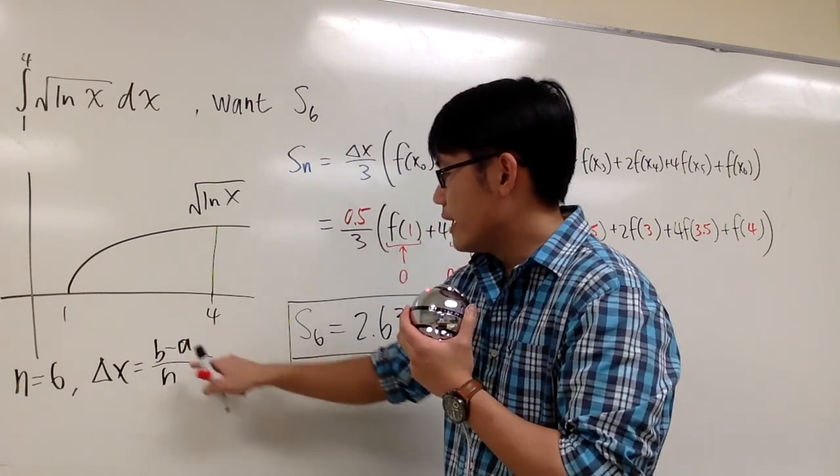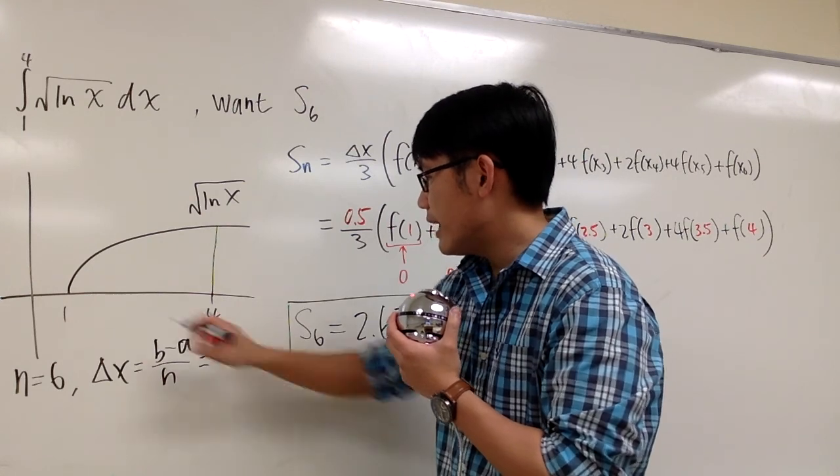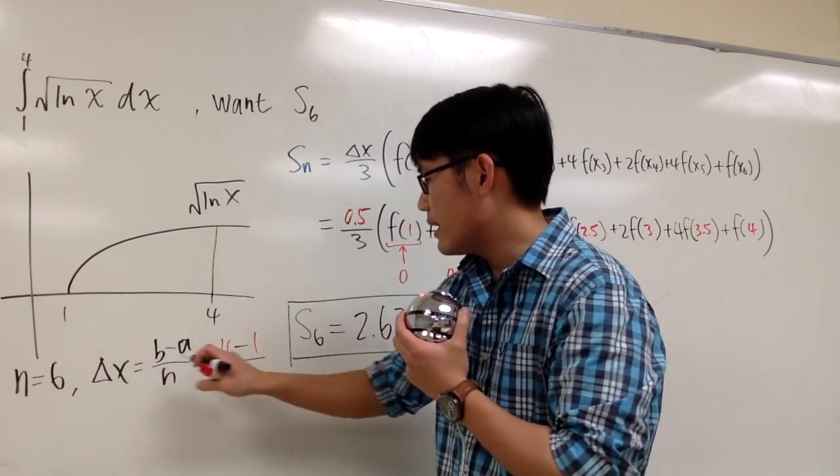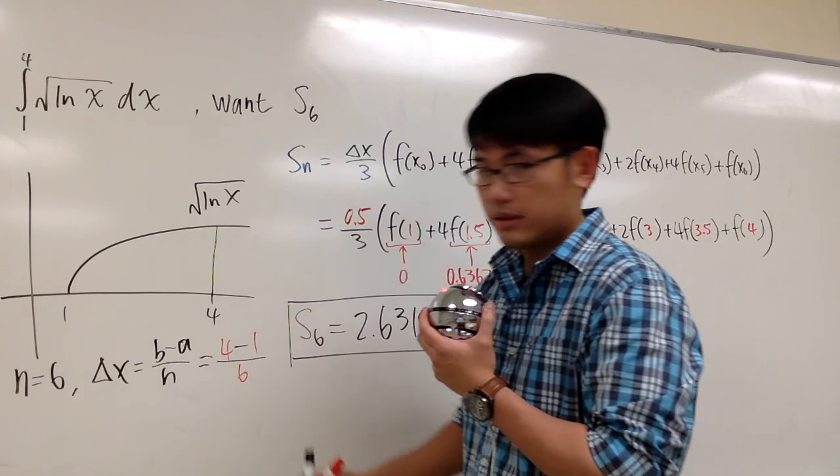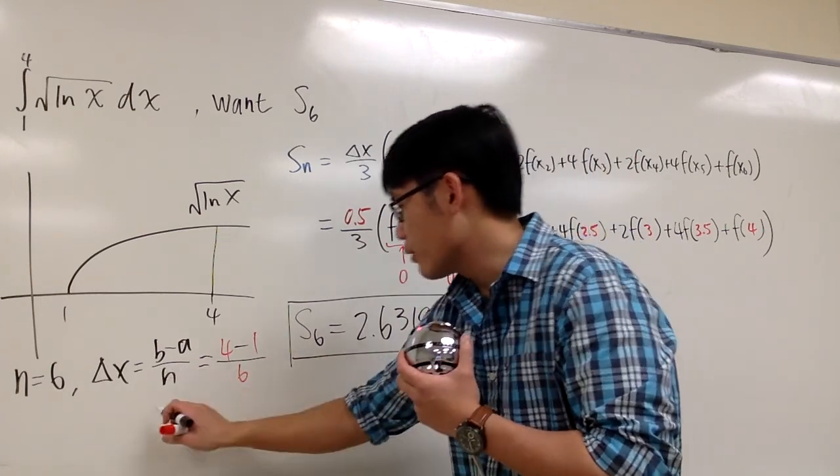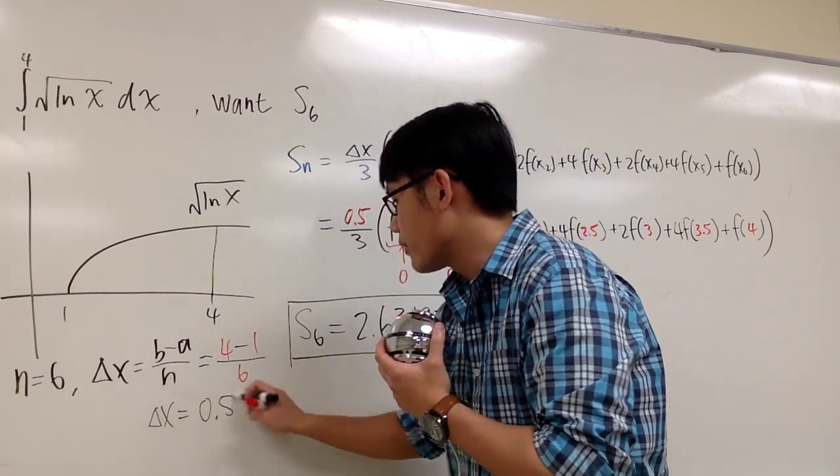This is my a. Anyways, b equals 4 minus a equals 1 divided by n equals 6. So you do this, and you get delta x equals 0.5.